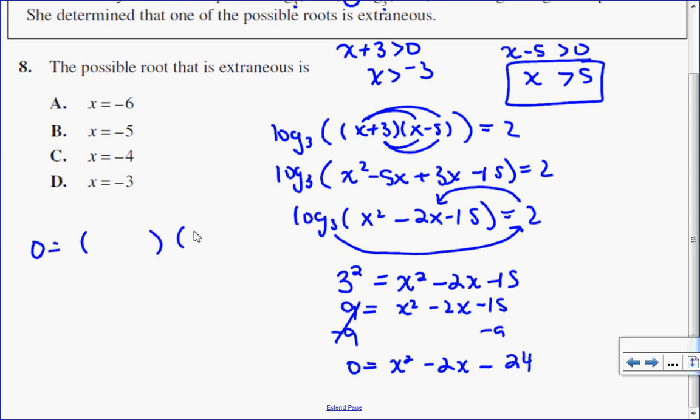To factor that, I'm looking for two numbers that multiply to negative 24 and add to negative 2. So I know that's negative 6 and positive 4. So I set each factor equal to 0, and I solve for x.